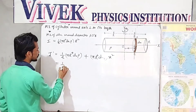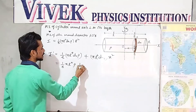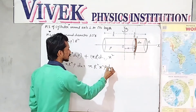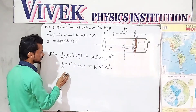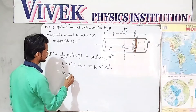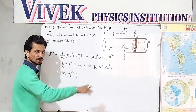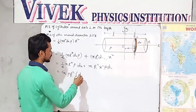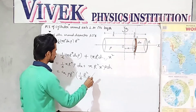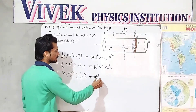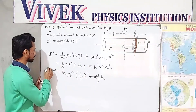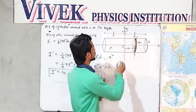Adjusting the terms, I have (1/4)π R⁴ ρ dx + π R² x² ρ dx. Taking π, ρ, R², and dx as common factors, the expression becomes π ρ R² [(1/4)R² + x²] dx. This is the moment of inertia of this particular disk around the OY axis.